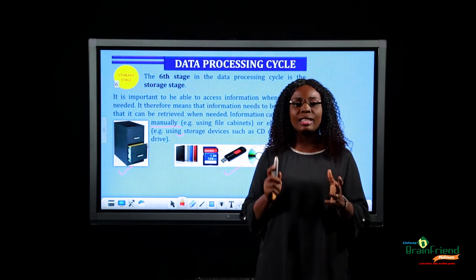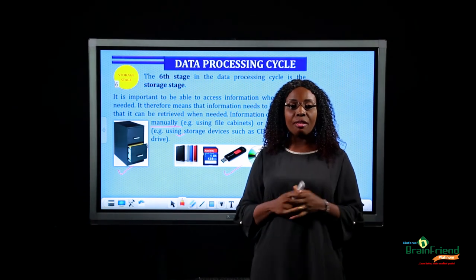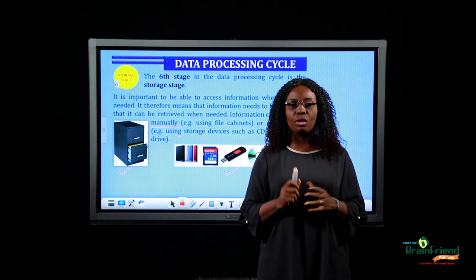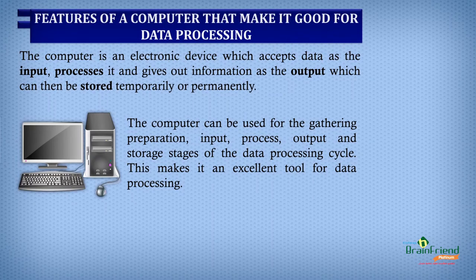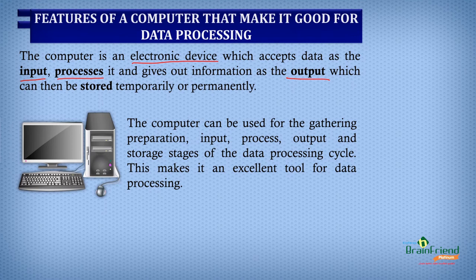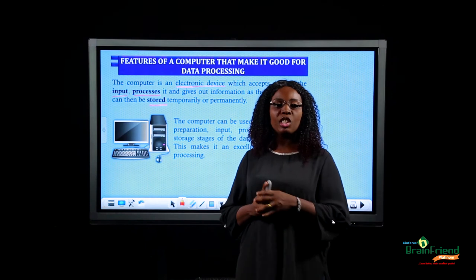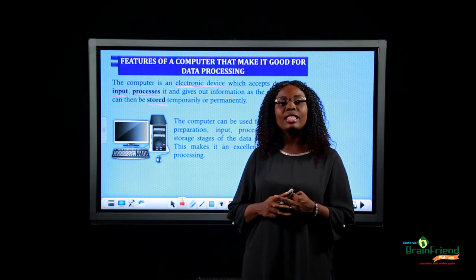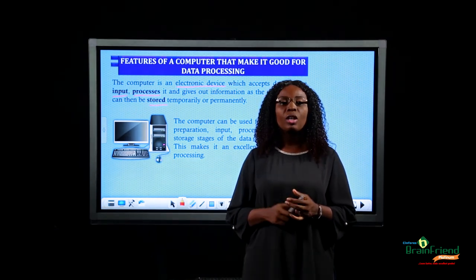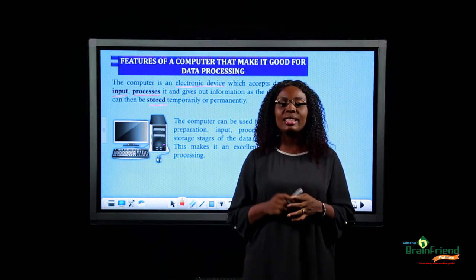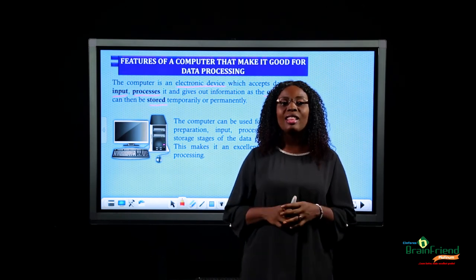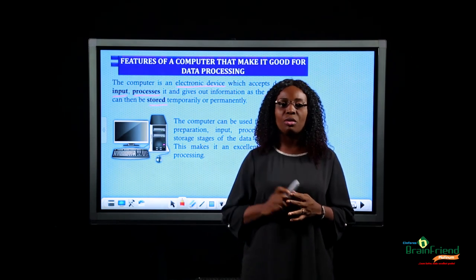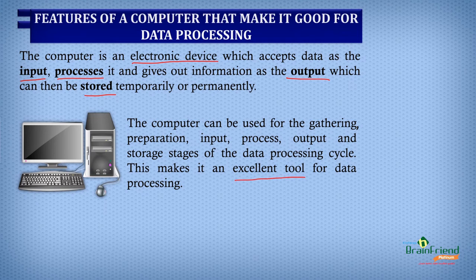Having looked at the different stages in the data processing cycle, let's look at the features of the computer that make it an excellent tool for data processing. A computer is an electronic device which accepts data as inputs, processes the data, and gives out information as outputs, which can then be stored temporarily or permanently. The computer has the ability to accept inputs, process the inputs, give out outputs, and store — tallying with the stages in the data processing cycle.